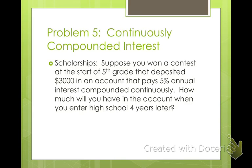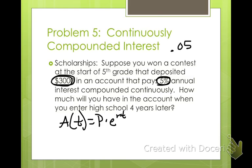So suppose you won a contest at the start of fifth grade that deposited $3,000 in an account that pays 5% annual interest compounded continuously. How much will you have in the account when you enter high school four years later? So we're looking at, using our equation, a of t equals p times e raised to the rt. You may have heard this as a equals pert. That's how I learned it. That's what my teacher said anyway. So your principal is how much you invested initially. Well, that's $3,000. Your rate is, your annual rate, 5% written as a decimal. So we're going to write that as .05. And then your time is in years. So we have four years. So you just go ahead and put those things in.